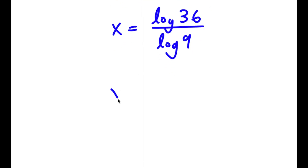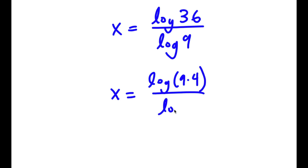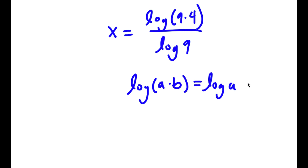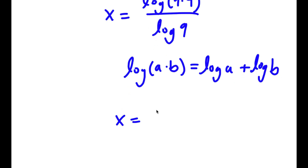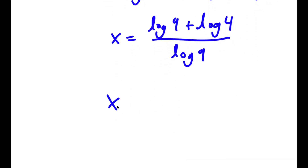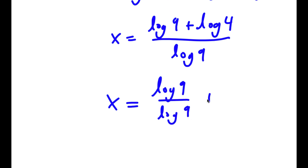Now, log 36 is the same thing as log of 9 times 4, so I have that over log of 9. And this is the same thing as — if I have something in the form log a times b, this is equal to log a plus log b. So log 9 times 4 equals log 9 plus log 4, and I have this over log 9. So now this is the same thing as log 9 over log 9 plus log 4 over log 9.